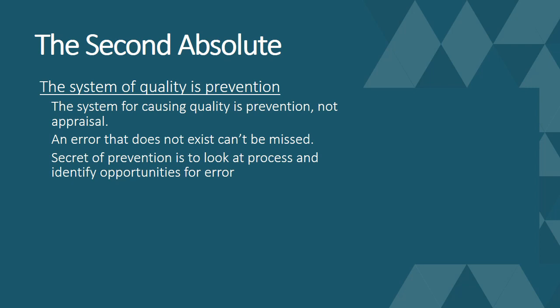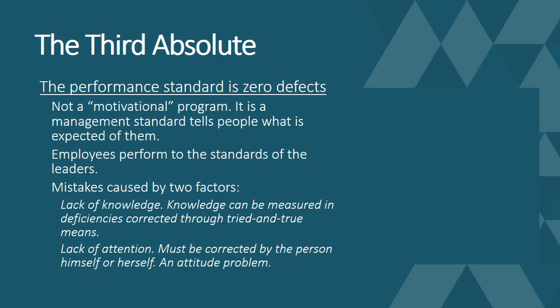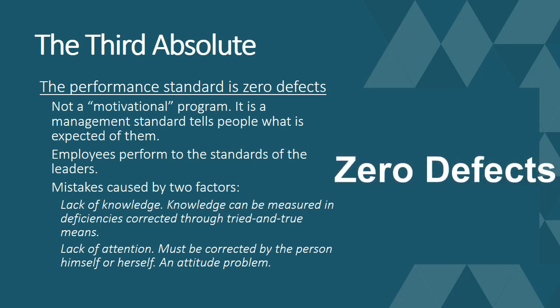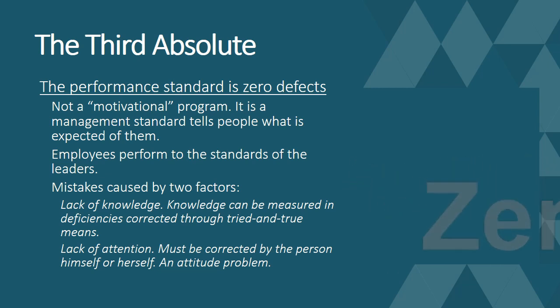The secret of prevention is to look at the process, identify opportunities for error, and then provide resources to correct that — making sure that error doesn't go into the system or the process. The third absolute of quality proposed by Crosby is that the performance standard is zero defect. There is no target to reduce defects; the target should be to have zero defects, and this is not a motivational program. Management has to set that standard of zero defect and then provide all the resources to make sure the zero defect program is successful.